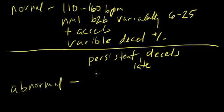Persistent late decels are those in which late decels are occurring with more than 50% of the contractions. And you're going to be acting if you see this.